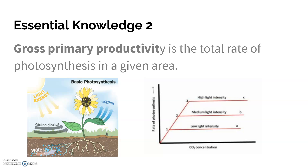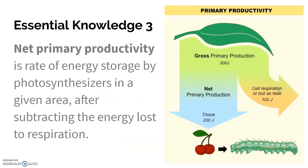Gross primary productivity is all of the photosynthesis that happens. Whereas net primary productivity is how much of that energy is available for the consumers. Plants have to use glucose for their own cellular respiration — they also need ATP to continue being a plant. So net primary productivity looks at what's left after the plant has done all of its life stuff, which can then be available to consumers for their own cellular respiration.